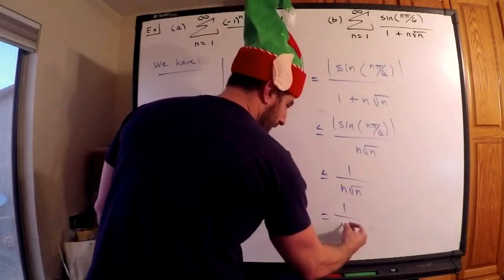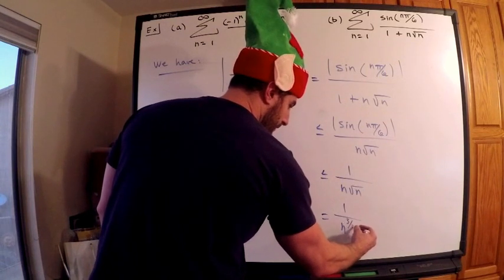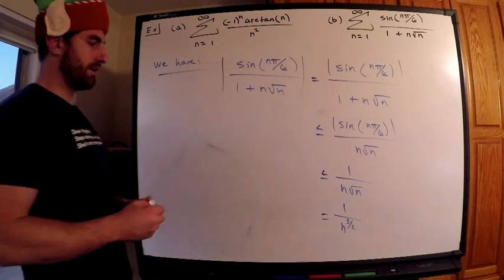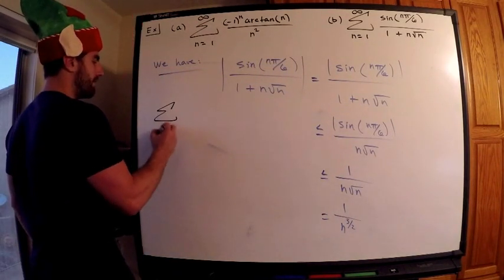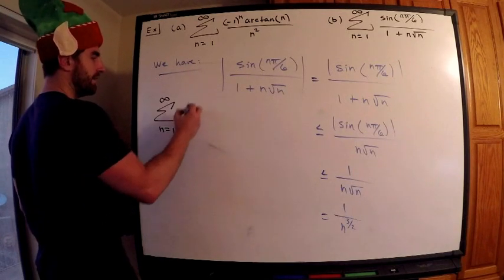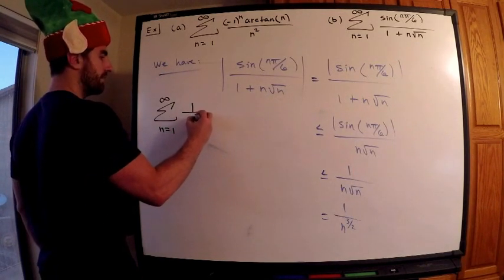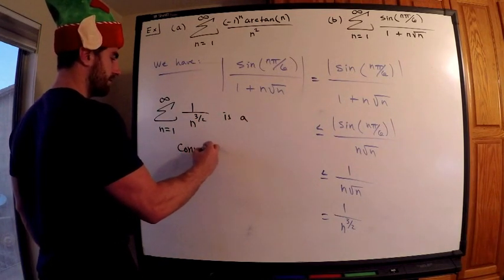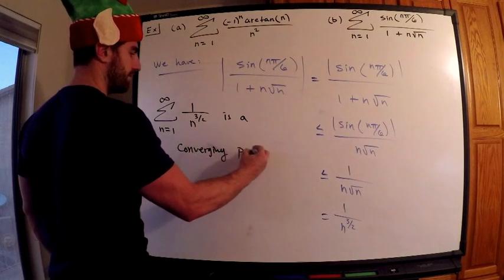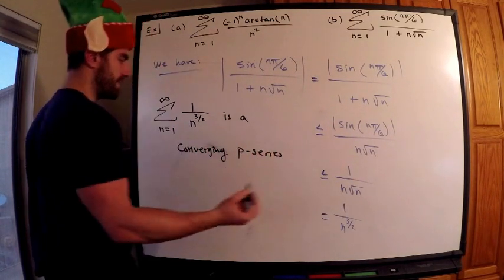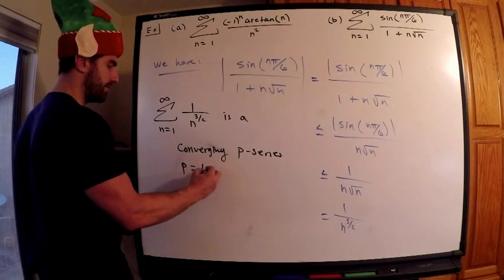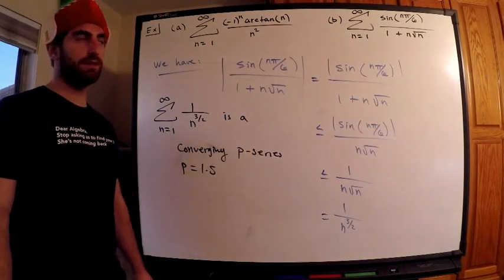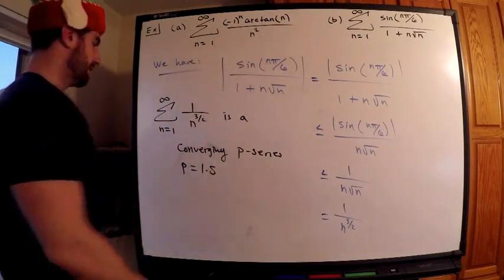This is equal to 1 over n to the 3 halves. I think you see that we're done. Okay. The sum n equals 1 to infinity of 1 over n to the 3 halves is a converging p-series. p is 3 halves. p is 1.5. Thus, this series converges absolutely, therefore it converges conditionally. Done.